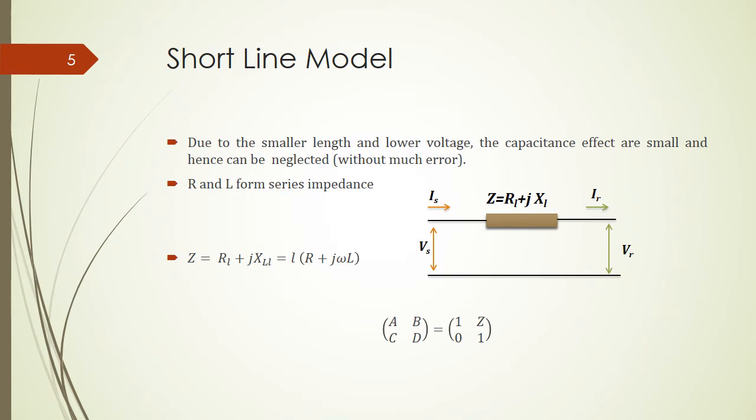For a short transmission line, due to the small length and low voltage, the capacitance effects are small and can be neglected without much error. Here we only have the series impedance of resistance and inductance. The Z is the impedance of the line and is given as the whole resistance plus the whole reactance, or by the length multiplying with the resistance per unit length and reactance per unit length. In this case, the ABCD model is simple as 1, Z, 0, 1.